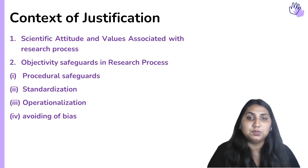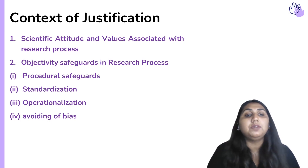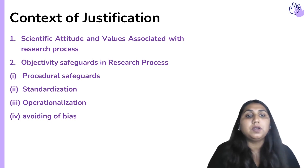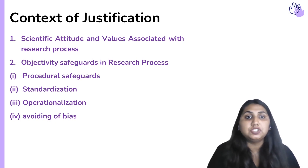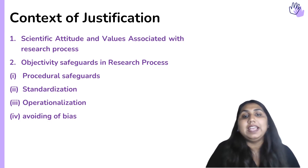Objectivity safeguards in the research process include procedural safeguards, standardization, operationalization, and avoiding bias. Procedural safeguards are used to increase objectivity by minimizing subjectivity in data collection and analysis. These safeguards often start with keeping a complete, organized record of observations and data analysis in such a way that other researchers can understand and evaluate it.